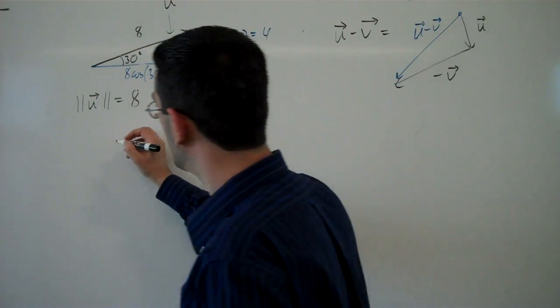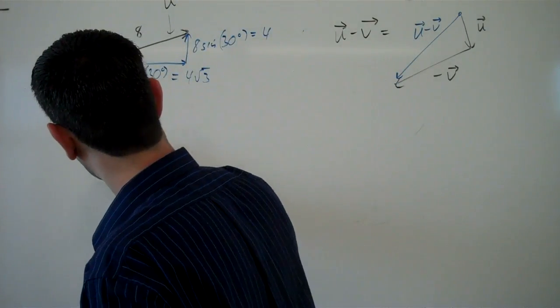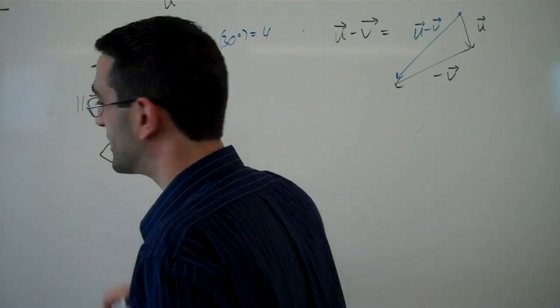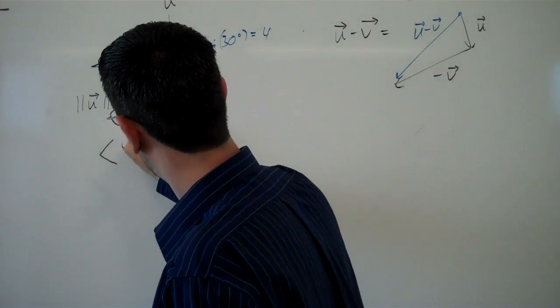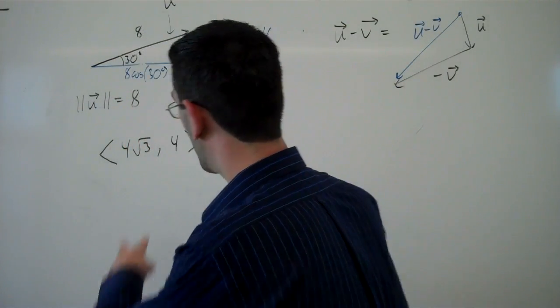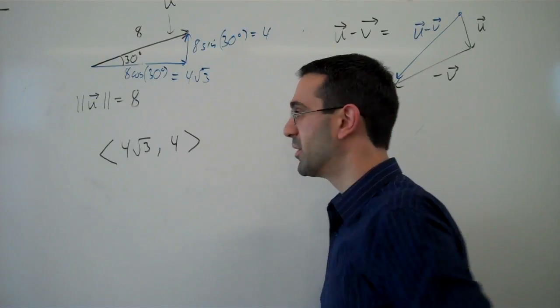Then we need some way to represent that. And there's two common ways. One is using angle brackets, mainly used to differentiate a vector from a point. And so this would be 4 root 3 comma 4, so horizontal component and vertical component.